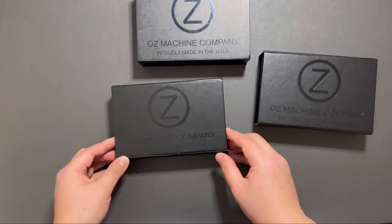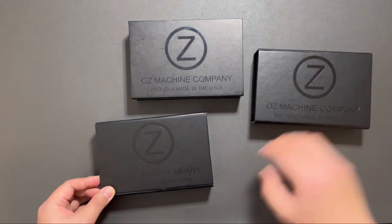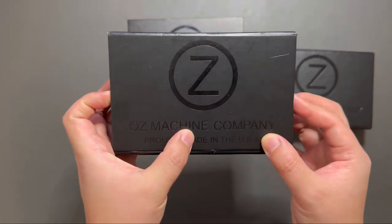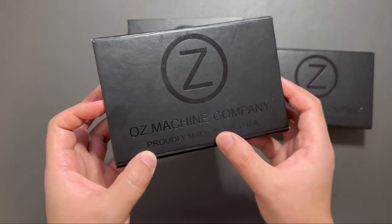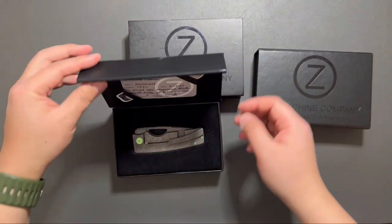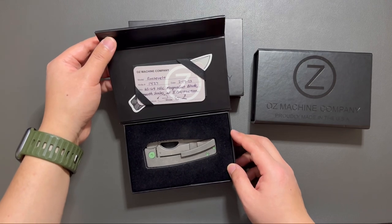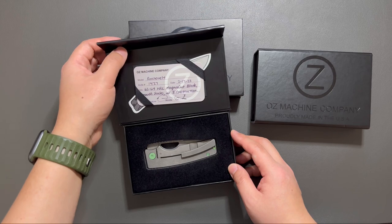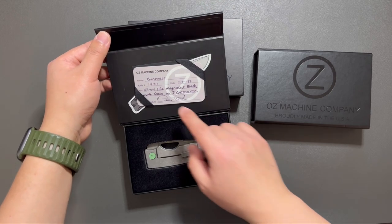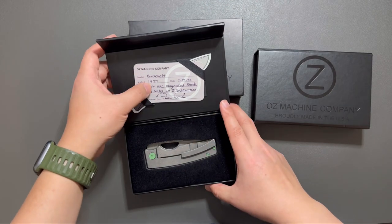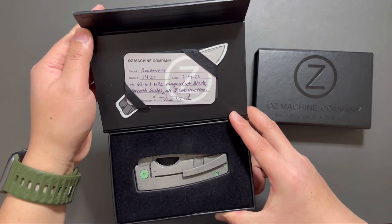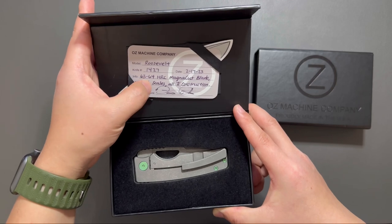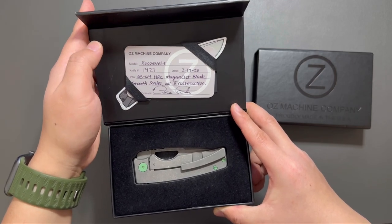This is from Oz Machine Company, made in USA. This one is Oz Machine Roosevelt, also known as the Rosie. This one is 1427, and 63 to 64 HRC magnet cut blade.